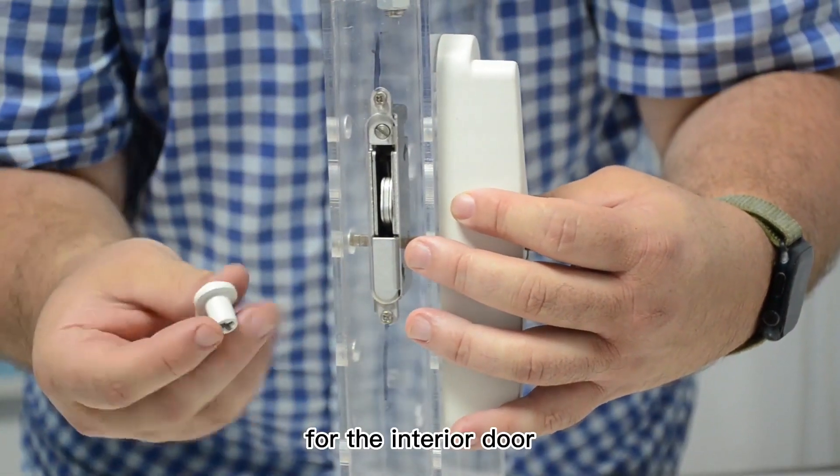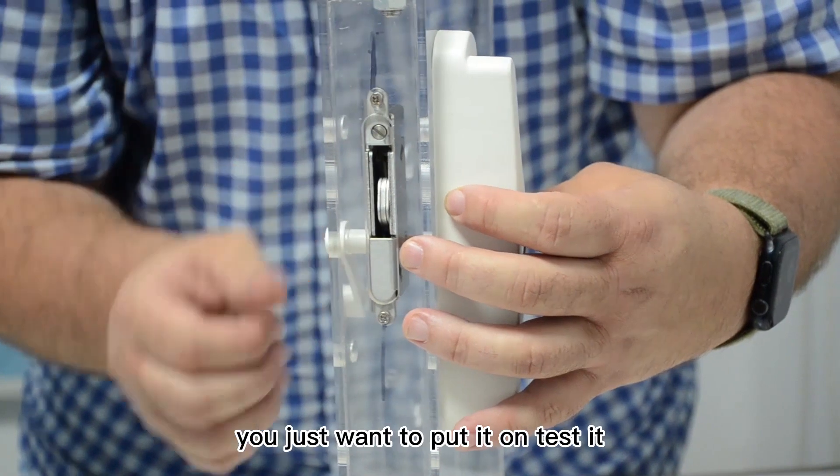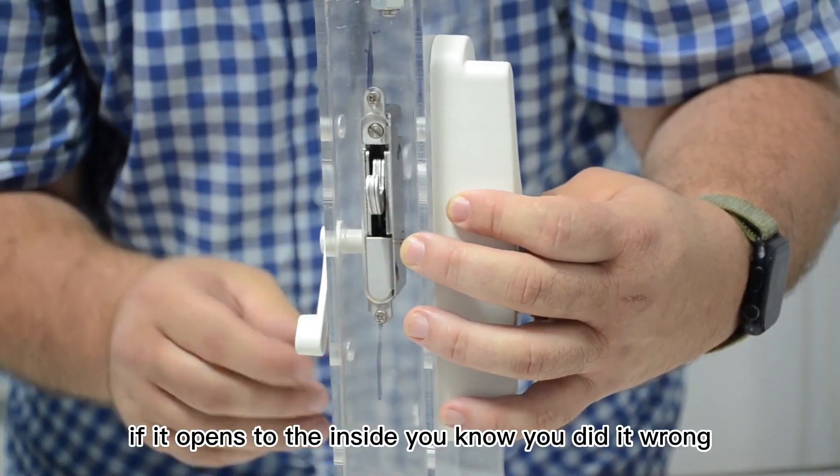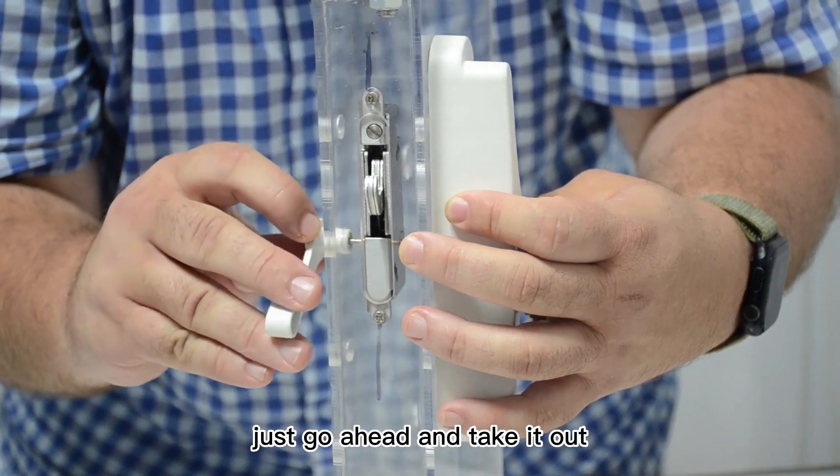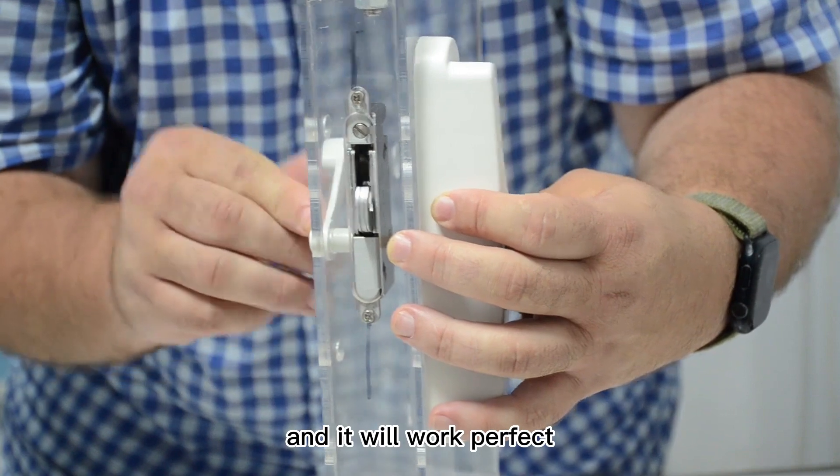For the interior lock handle, we just want to put it on and test it. Make sure it works. If it opens to the inside, you know you did it wrong. Just go ahead and take it out, turn it 90 degrees, and now it will work perfect.